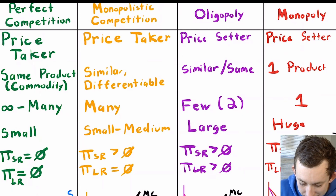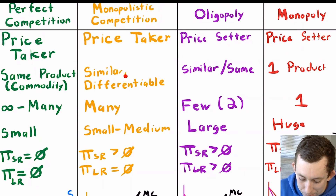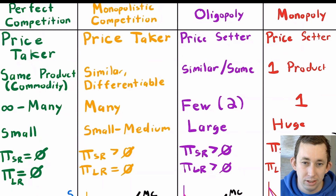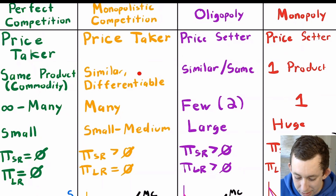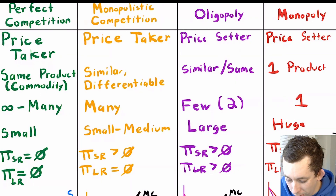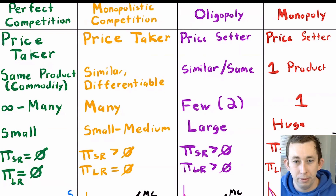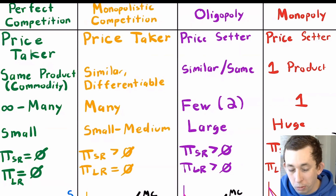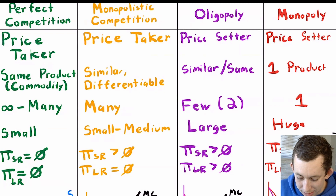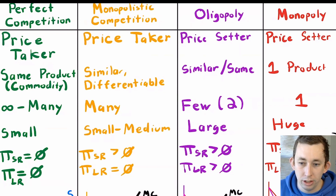In perfect competition and monopolistic competition, firms are price takers — they do not have market power. In terms of products: in perfect competition we're selling the same product, like milk. In monopolistic competition we're selling similar but differentiable products, like cars — you can tell the difference between a Toyota and a Honda. In oligopoly we're making a similar or same product, like Boeing versus Airbus making commercial airliners.